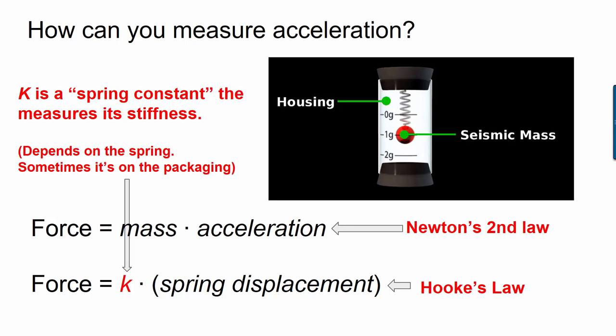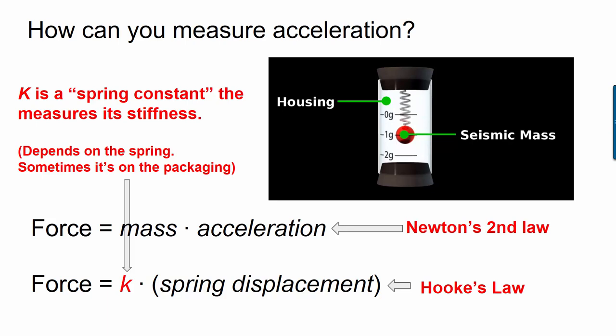Let's put these two things together now. You'll notice that both these equations have force in them. Let's say that the housing that contains my mass and spring is undergoing an unknown acceleration that I want to measure. Acceleration is the unknown. I know the size of the mass, and so I know that the acceleration is going to be equal to whatever force caused it divided by the mass.